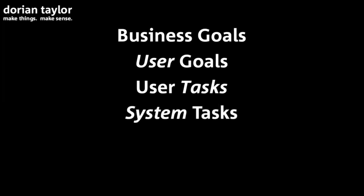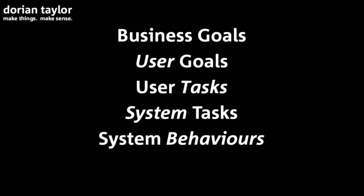We proceed from user goals to user tasks — the task is not a goal, it's whatever you have to do in order to achieve a goal. Then we move from user tasks to system tasks: what the system has to do to support the user in completing their task, to achieve the goal to the extent it intersects with business goals. Then we proceed to system behaviors — the fine-grained prescriptions and proscriptions, rules about what must happen or must not happen while the system is carrying out its end of the task.